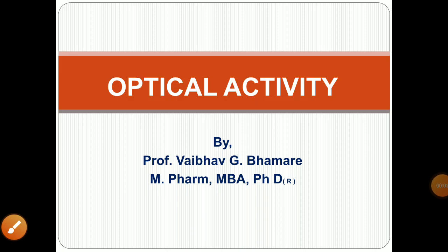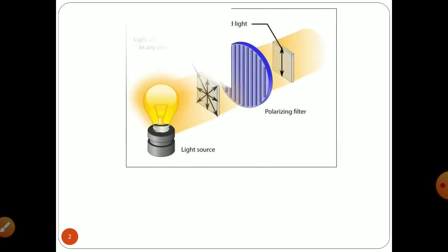Dear learners, we will discuss optical activity. An ordinary light consists of electromagnetic waves having oscillations propagating in all directions. When we have a dark room and ignite a bulb, we observe that the dark room is lightened by those light rays. The light rays from a regular light source travel in all directions, and those light rays are known as unpolarized light rays.